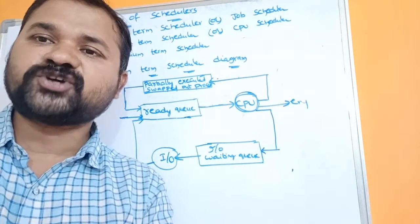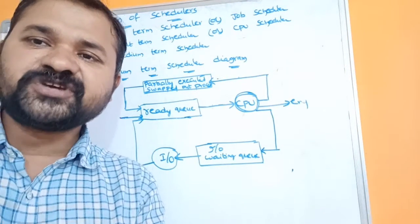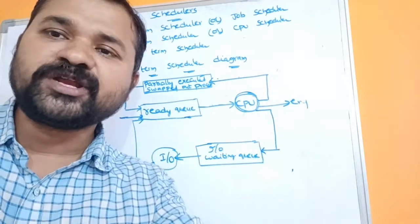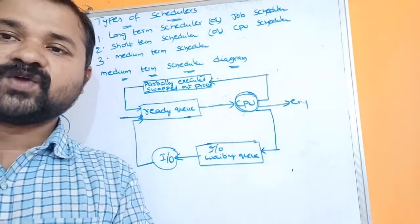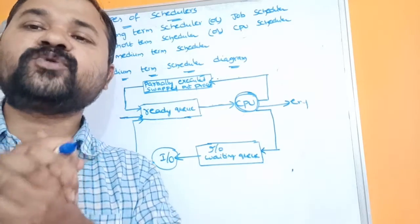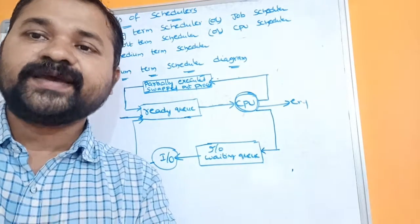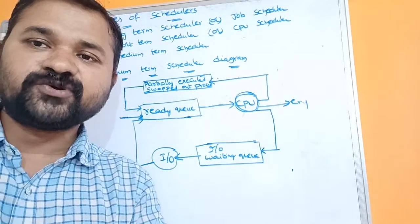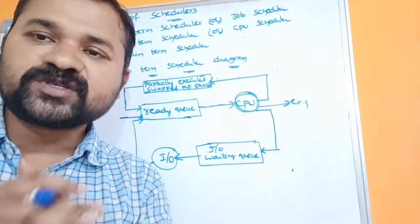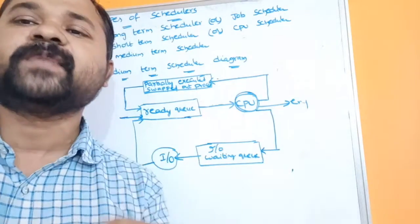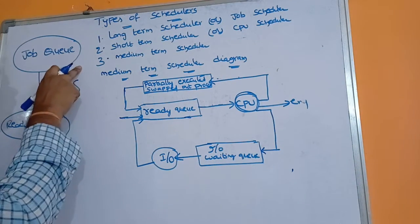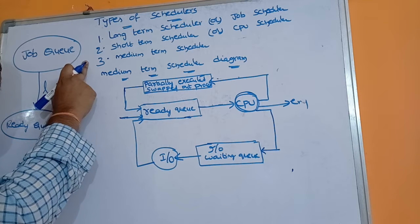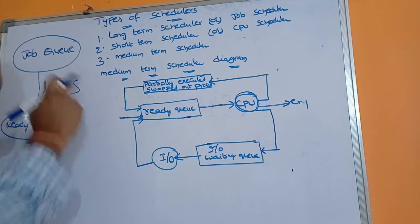Long-term scheduler, or job scheduler: the long-term scheduler loads processes from secondary memory to the main memory. This is because the CPU can execute a process only if it resides in main memory. In secondary memory we have a queue called the job queue, which contains a list of all the processes in the system.